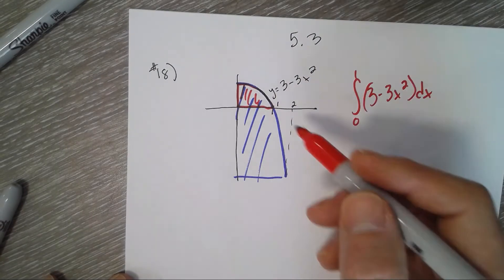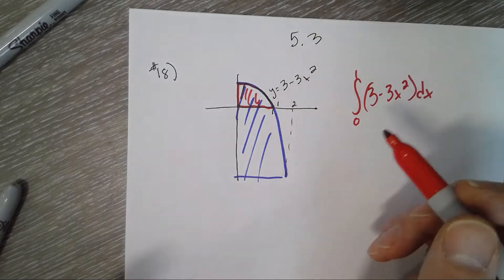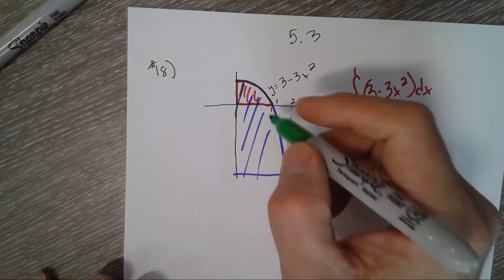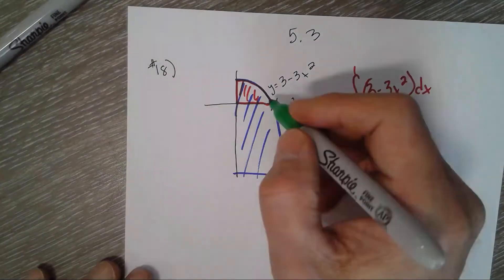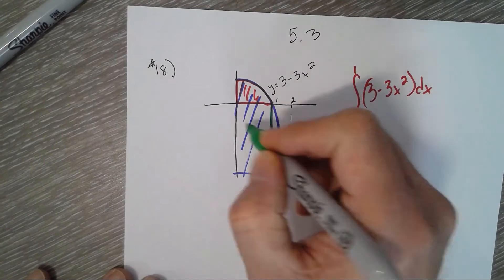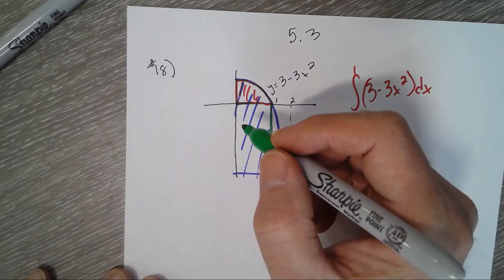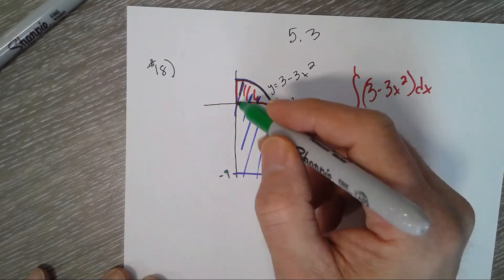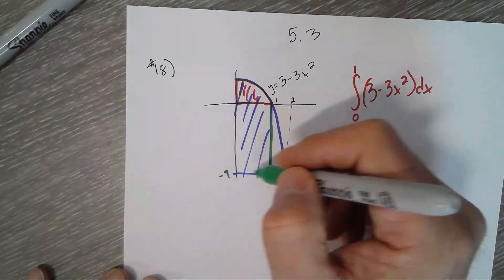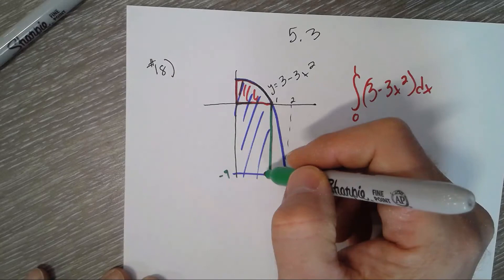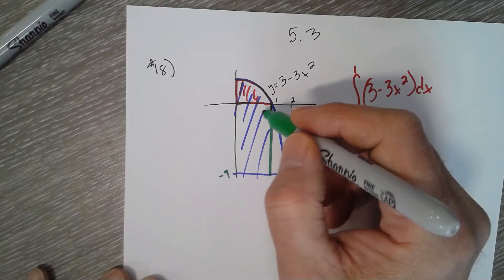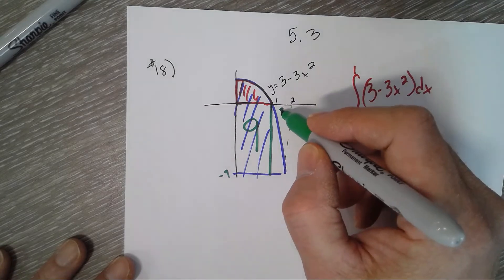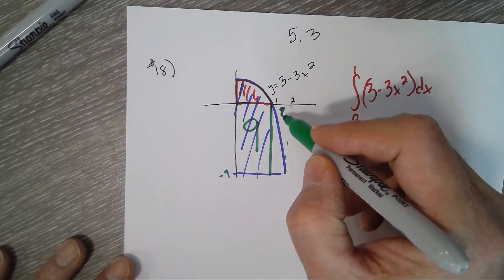This area here is just a rectangle, which is negative 9, so 9 times 1, so that's 9. So we have that plus 9, and now we can find this question mark area right there by integrating the equation from 1 to 2.